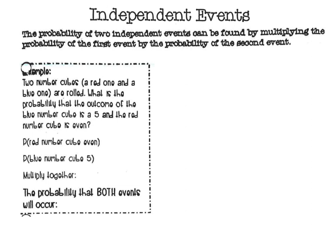Now switch to the next page — the tab says independent events. Let's look at the definition. This one says the probability of two independent events can be found by multiplying the probability of the first one and the second one. Still multiplying no matter if it's independent or dependent. We're going to go through the writing process the same way.